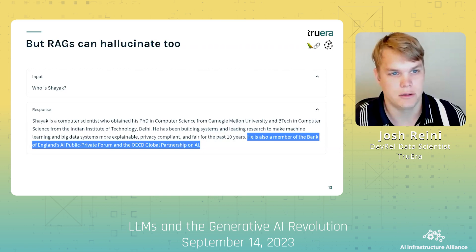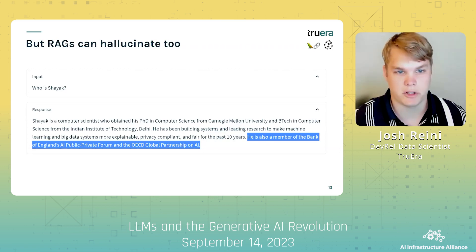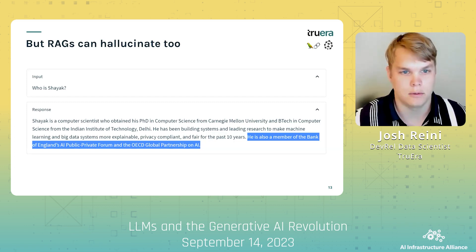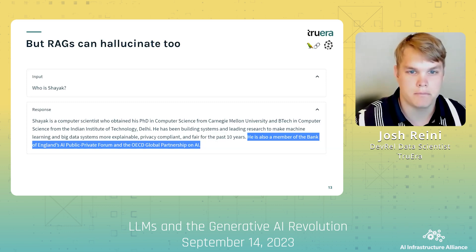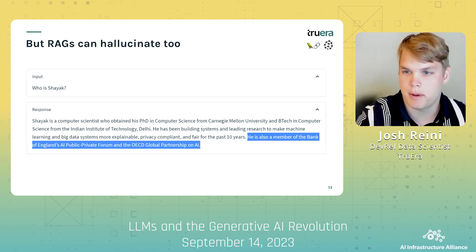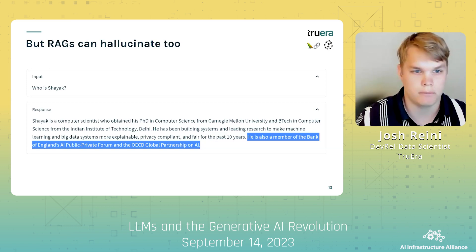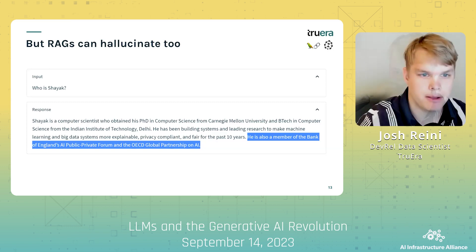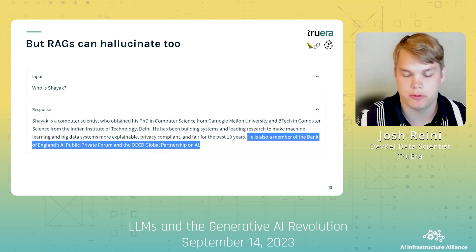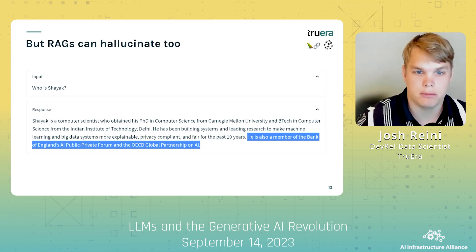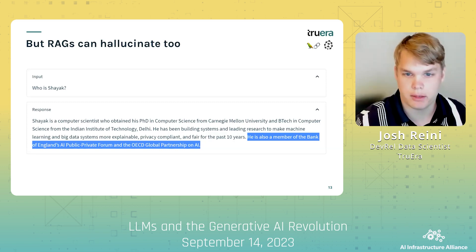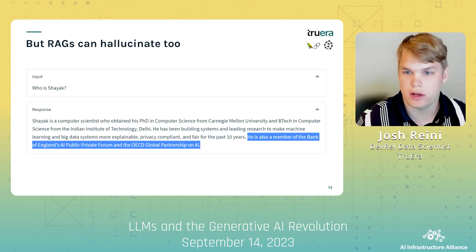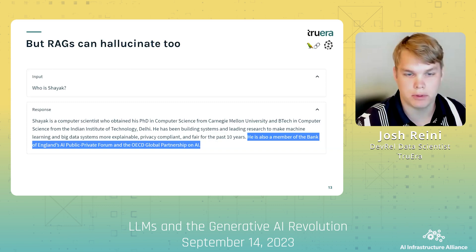But RAGs are not a silver bullet. We built a simple RAG QA on top of our website and docs, then asked it who is Chiac — Chiac being one of our founders. The application responded with a mostly correct answer, including his time at CMU, but it also hallucinated a detail about being a member of the Bank of England AI Public Private Forum and OECD Global Partnership on AI. Instead, this was referring to another member of our team named Shamik. This likely occurred because of how each name was tokenized: Chiac was broken up into 'sha' and 'yak', and Shamik into 'sha' and 'meek', so Shamik's background was stored in a similar place in the vector store and both were retrieved.